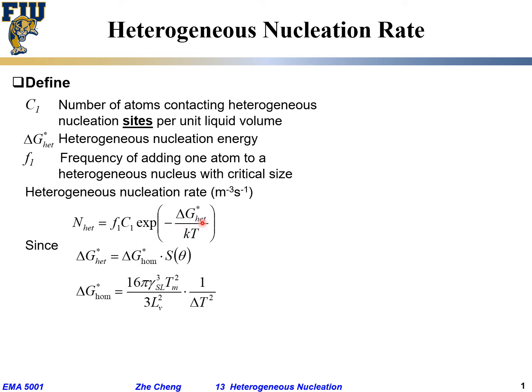And then heterogeneous nucleation barrier would be homogeneous nucleation barrier times the S-factor, right? The volume ratio between sphere cap to the whole sphere, that's our S(θ) term. And then the homogeneous term would be given as we did before, it's inversely proportioned to ΔT undercooling squared.